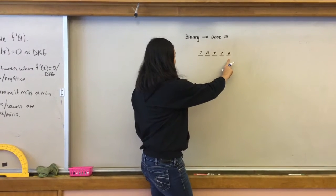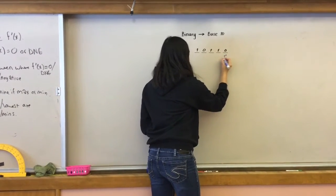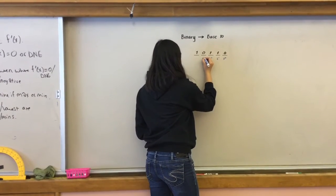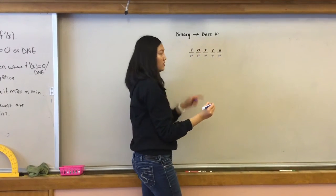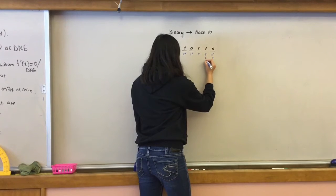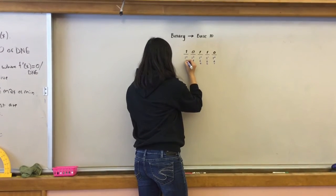And then we're going to start counting from the right, and we're going to label this digit 2 to the 0, 2 to the 1, 2 to the 2, 2 to the 3, 2 to the 4. So each of these numbers represent 1, 2, 4, 8, and 16.